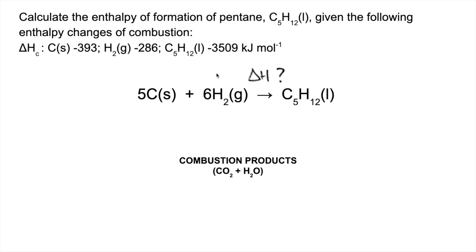We need to combust the reactants. Five times -393, so five times this value here because this is kilojoules per mole. We've got five moles of carbon in the cycle. And combustion of six moles of H₂, six times -286. That's a total of -3681.